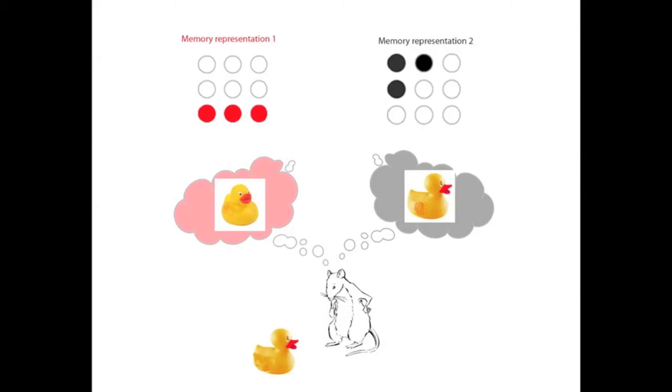Theorists have hypothesized that the hippocampal role in memory is to create independent representations of experiences to ensure a lack of interference between similar memories. However, studies have shown that the hippocampus is involved in linking related memories, a computation that is not easily solved if each memory is stored independently of the next.